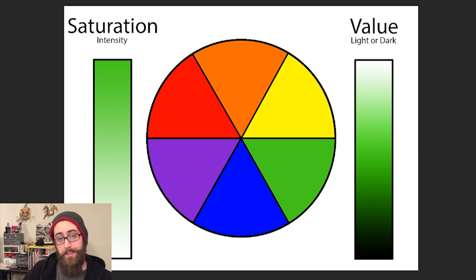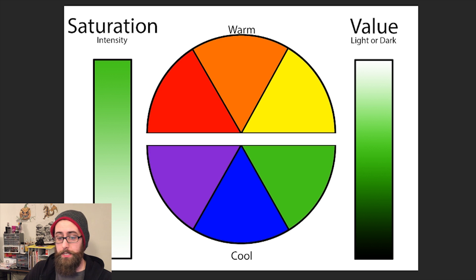Now that we have our color wheel here we can actually separate it into two separate groups as well. This being the warm colors: red, orange, and yellow along the top, as well as cool colors: the purples, blues, and greens along the bottom.